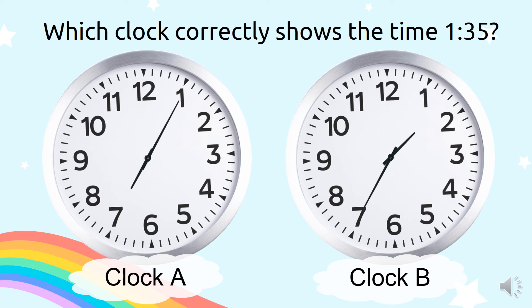To tell time, we look at the hour hand first and then the minute hand. So, for clock A, the hour hand is pointing to 7, and the minute hand is pointing to 1, which is 5 minutes. Clock A shows the time 7:05. The hour hand in clock B is pointing to 1, and the minute hand is pointing to 7, which is 35 minutes. The time on clock B is 1:35. So, our answer is clock B.